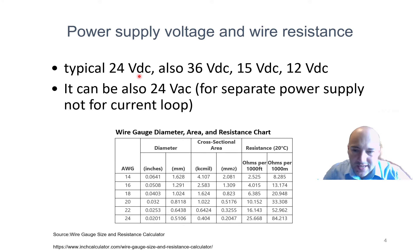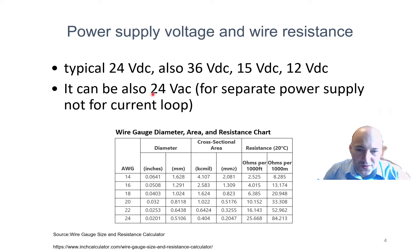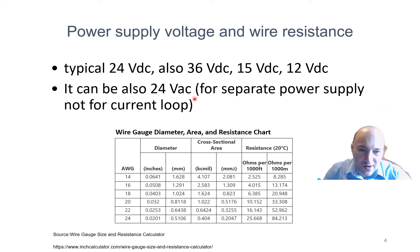If you are using AC voltage, you cannot power the sensor directly from the current loop — this only works for DC voltage. Using AC will give you at least a three-wire connection between your sensor and your controller system.